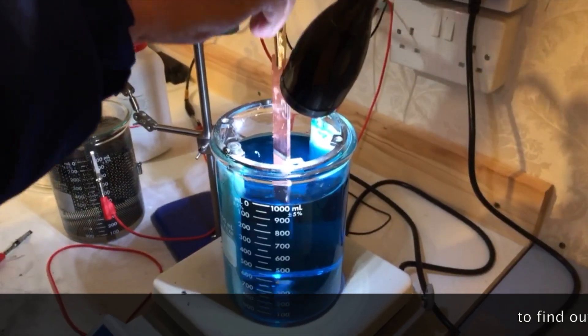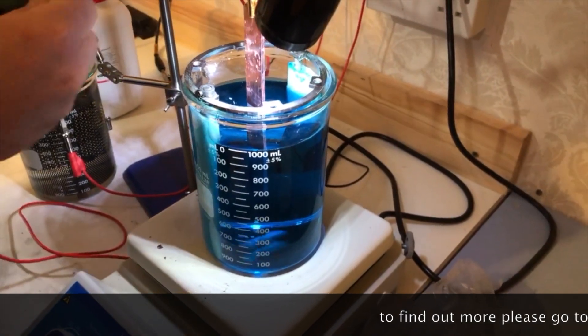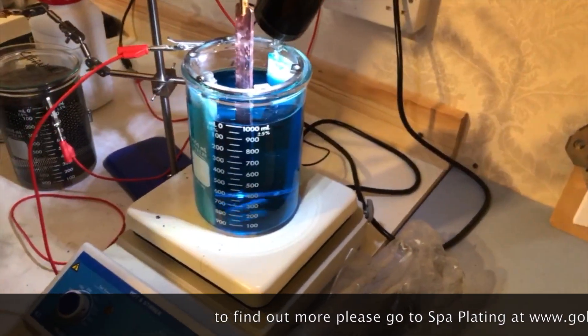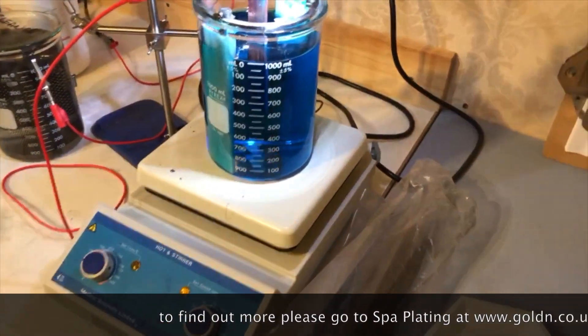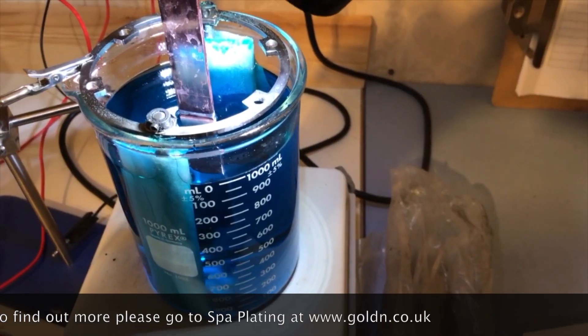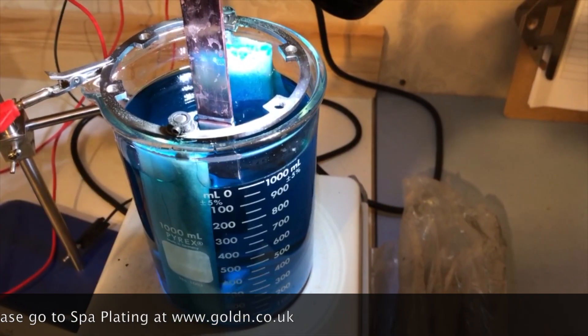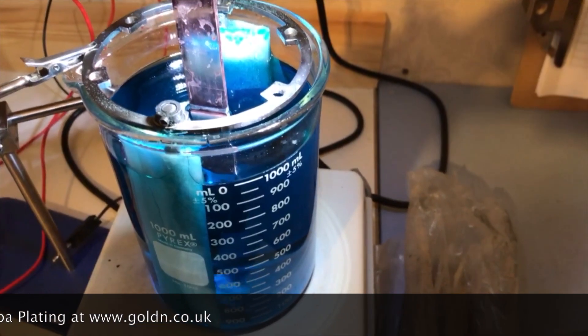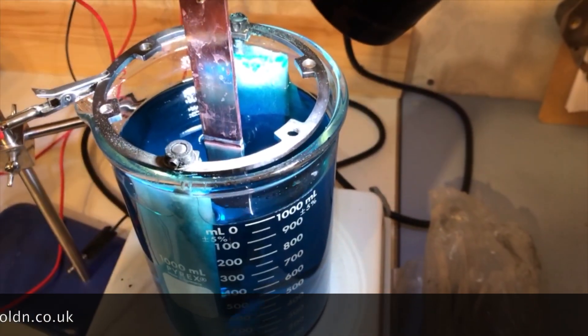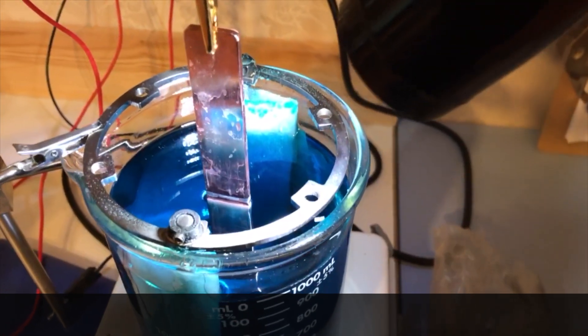You put this now in the electroforming copper, which is an acid copper, for about 15 minutes. How to set the rectifier you'll find on the spa plating website. Leave it in there for 15 minutes - in this case it will plate about 10 microns on there, which is enough. You can plate more, but 10 microns is fine. How do I know it's 10 microns in 15 minutes? We put it on an XRF machine - we have an x-ray here and we can measure the thickness.